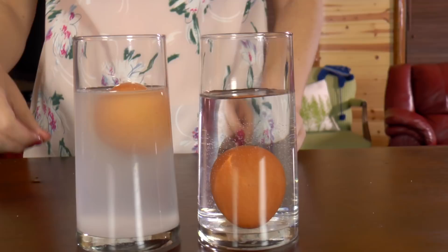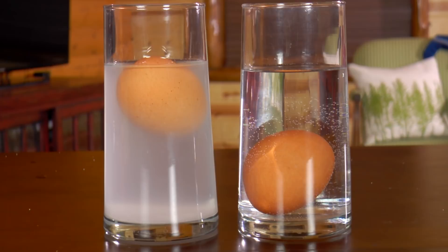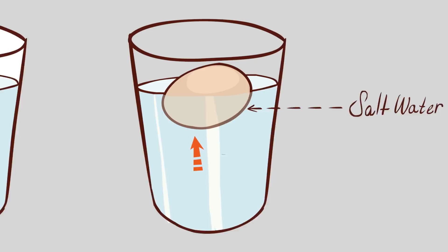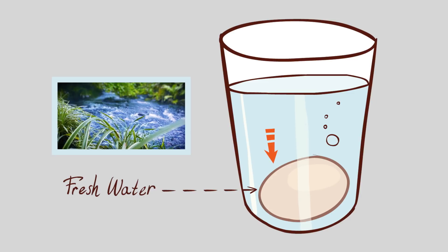Wow, it looks like the egg floats in the salt water and sinks in the fresh water. Salt water has a higher density than the egg, so the egg floats. The egg sinks in the fresh water because the egg's density is higher than the density of the water.